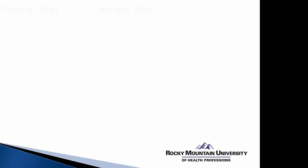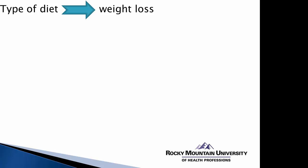We'll first discuss the problem that we're very often faced with in experimental research that ANCOVA can help us solve. So let's say we have type of diet as our independent variable, and we want to determine if different types of diets can produce different levels of weight loss — in other words, if type of diet has a cause-and-effect relationship with weight loss.